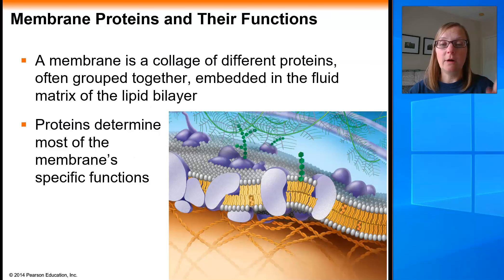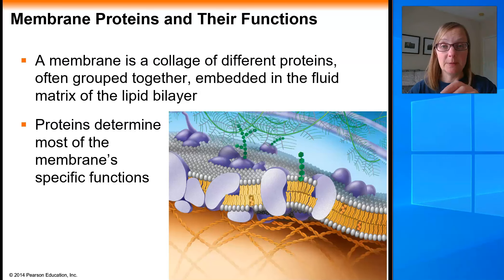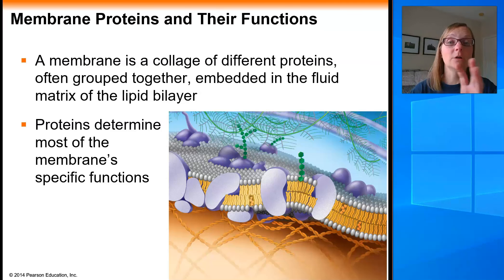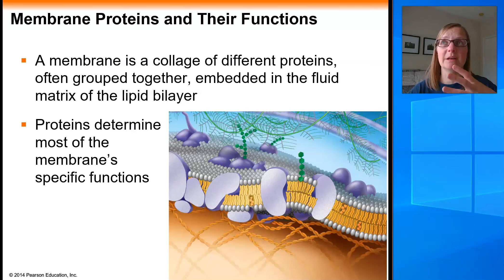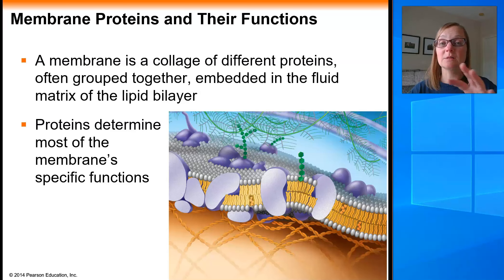So far we've focused on the lipid component of a membrane — phospholipids and cholesterol in animal cells — which regulate fluidity. But the actual function of a membrane really comes from the proteins embedded in that phospholipid bilayer. Now we'll switch gears and talk about functionality and membrane proteins. The membrane is a fluid mosaic — a collage of different proteins often grouped together in certain spots within the membrane to accomplish specific jobs.